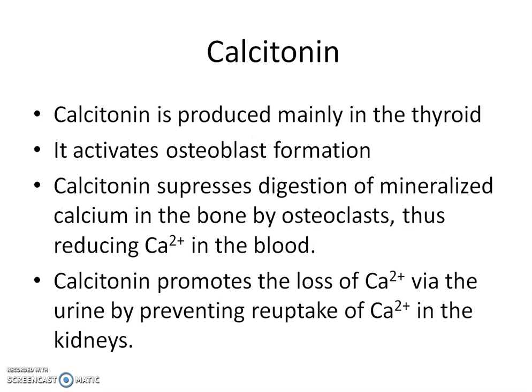Let's look at calcitonin. Calcitonin is produced mainly in the thyroid. It activates osteoblast formation. Calcitonin suppresses digestion of mineralized calcium in the bone by osteoclasts, thus reducing calcium 2+ in the blood. Calcitonin also promotes the loss of calcium 2+ through the urine by preventing re-uptake of calcium 2+ by the kidneys.